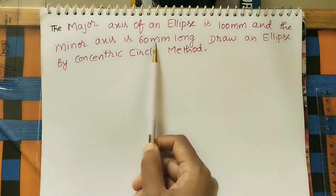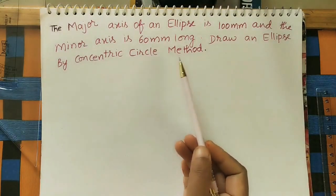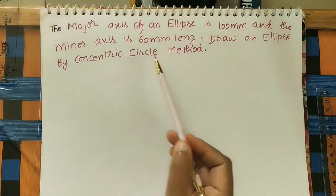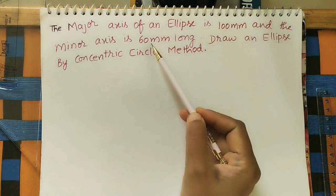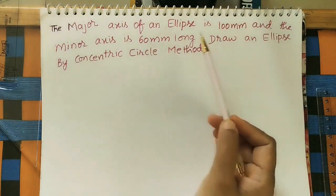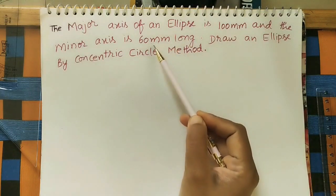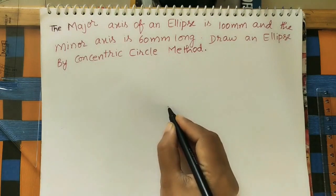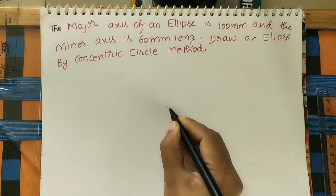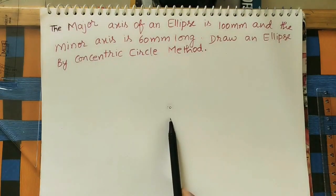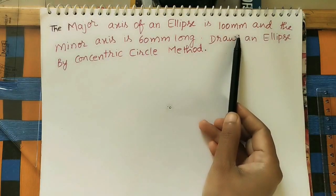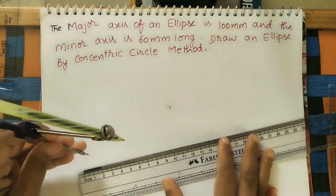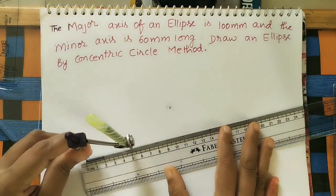In the concentric circle method, always remember we have to draw two circles — one with the major axis diameter and one with the minor axis diameter. One circle is 10 centimeter diameter, the other is 6 centimeter diameter. To draw the circles, first mark one center O. With O as center, draw the 10 centimeter diameter circle, which means 5 centimeter radius — take 5 centimeter radius on the compass.